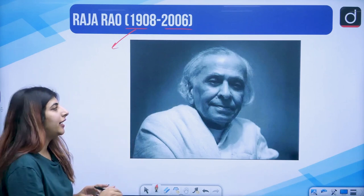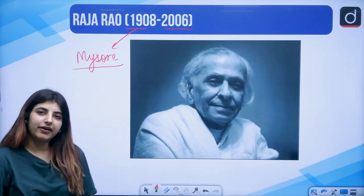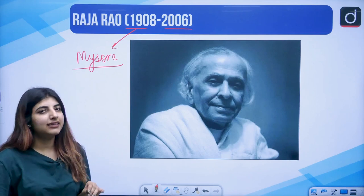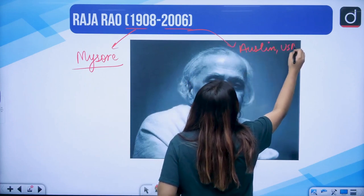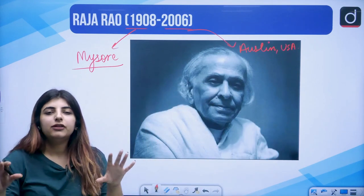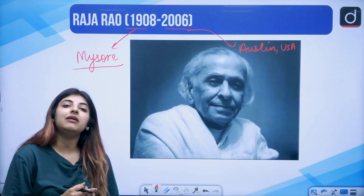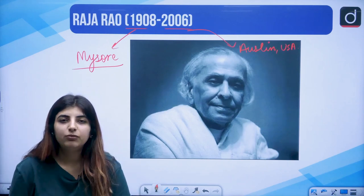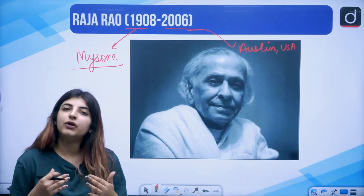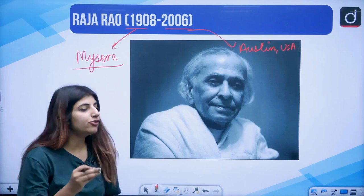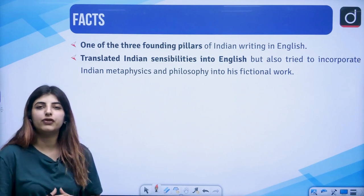In 1908, he was born in Mysore, and in 2006 he passed away in Austin, Texas in USA. These are certain biographical details. One thing I want you to majorly note down is that he was married, and his marriage had an impact on his novels. Certain themes — we say that writers get some kind of motivation, some kind of inspiration from their own life. Same was the case with Raja Rao. He is also one of the prominent writers writing in the mid-decades of the 20th century.